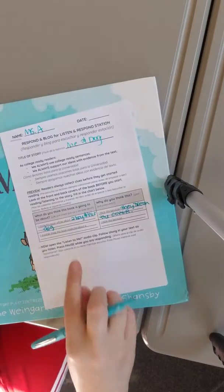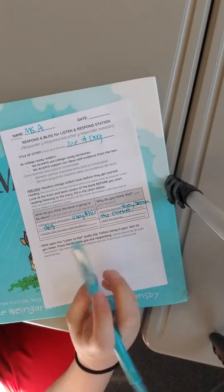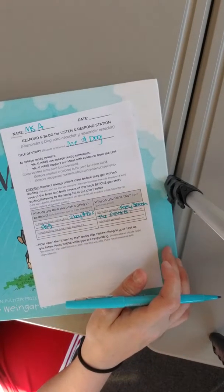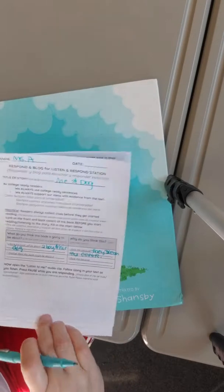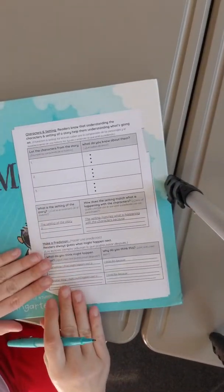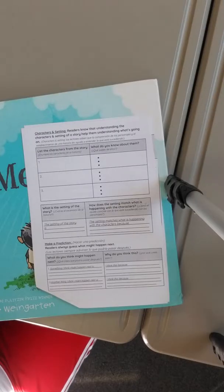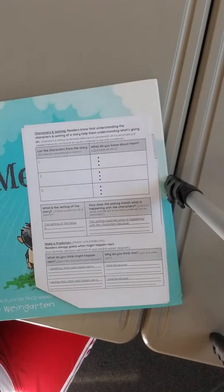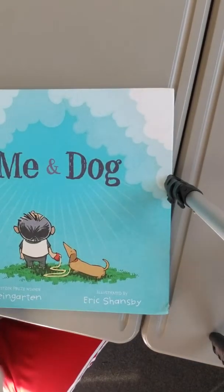So you can have this written down on your first one, but for the second one I would like for you to come up with your own guess about what you think this story might be about. Once you've done that, you can come back and we will go to the next section. Remember, the next section is characters and setting. Readers know and understand that the characters and setting of a story help them to understand what's going on. So let's go ahead and get started. Me and Dog.